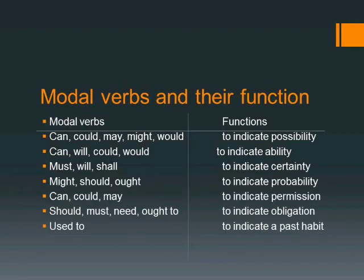Some modal verbs and their functions: Can, could, may, might, would — ye indicate kerti hain possibility ko, yaanye kisi kaam ke mumkin hone ko. Can, will, could, would — ye indicate kerti hain ability ko. Must, will, shall — ye certainty ko indicate kerti hain, yaanye kisi kaam jo kisi taur par hona hi hai. Might, should, ought — ye probability ko show kerti hain.